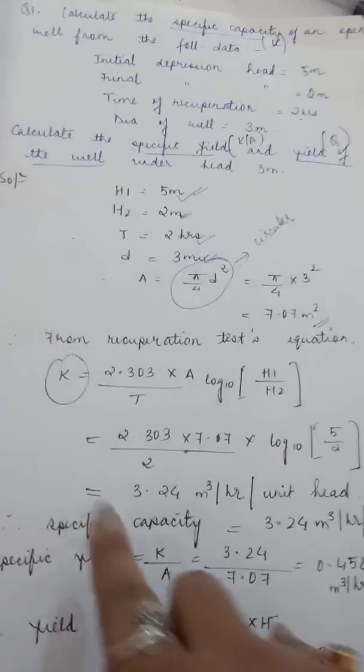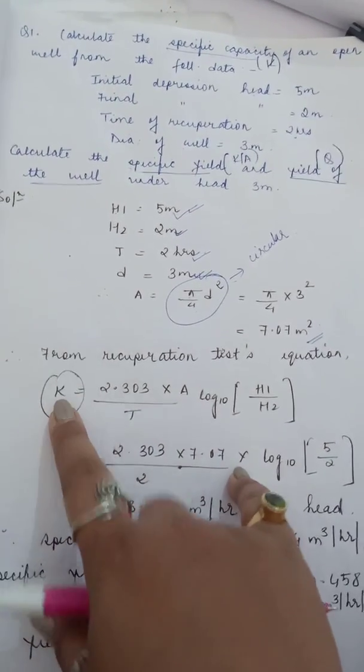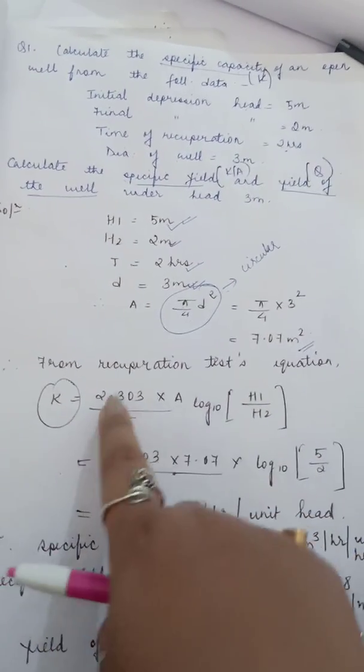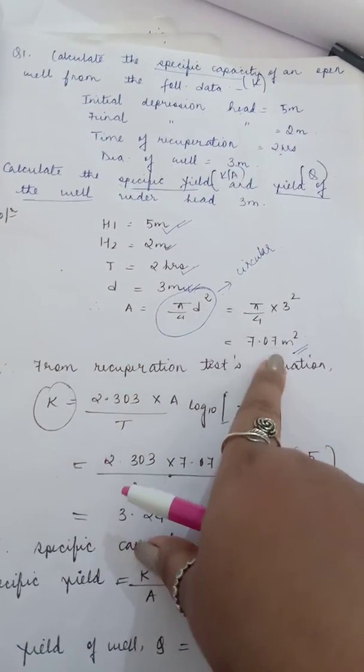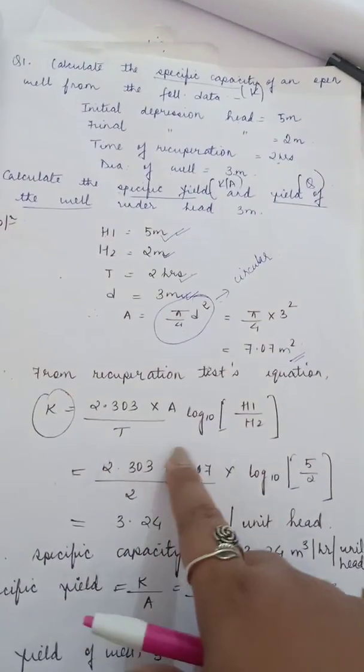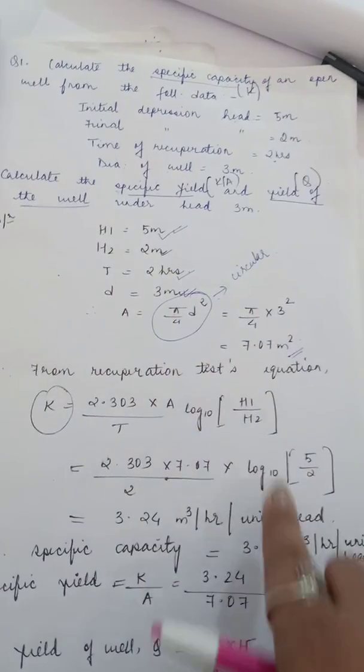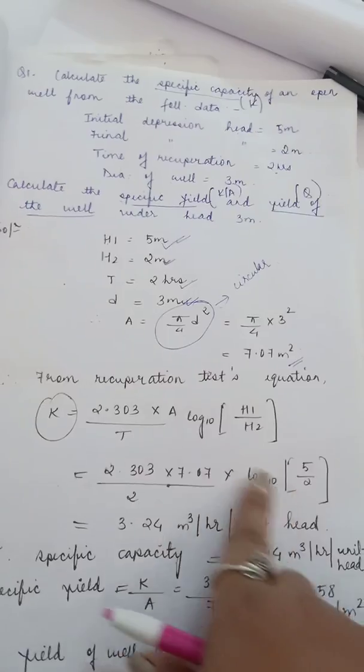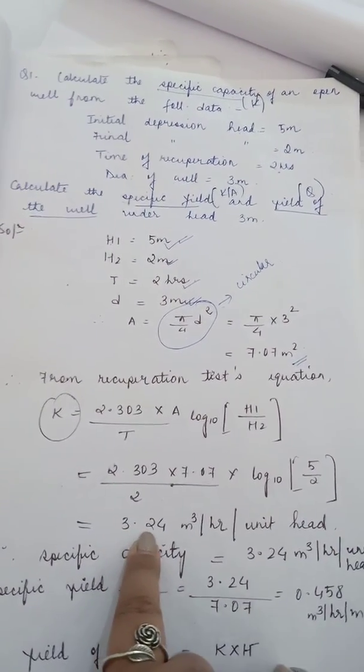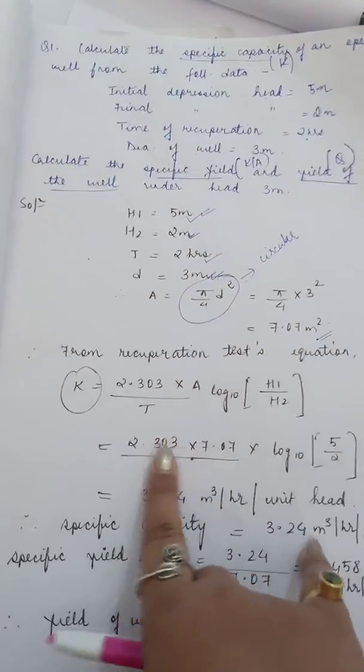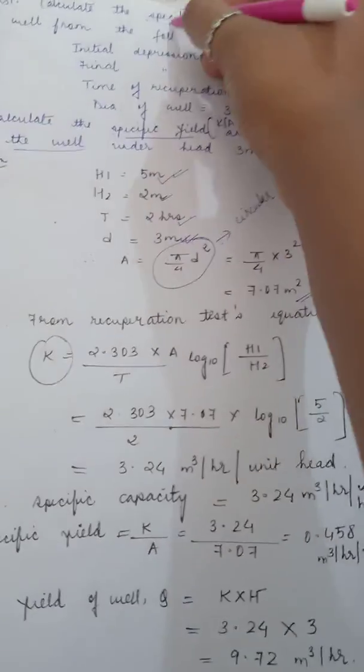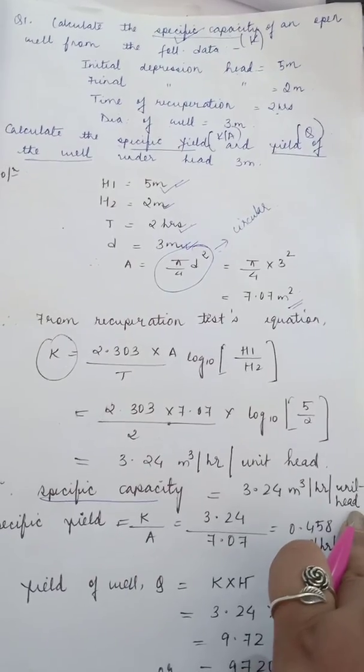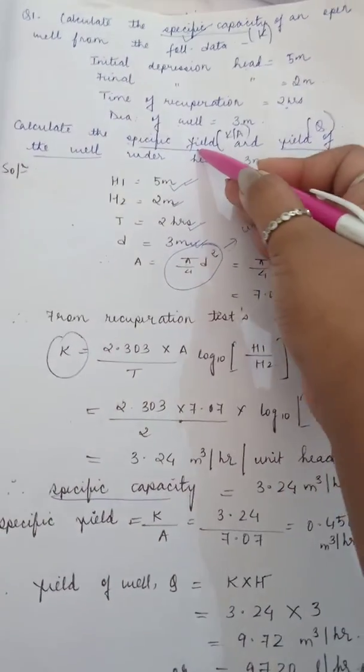Since we're asked to find the specific capacity, we can directly put values in this equation. K equals 2.303 times A which is 7.07 divided by t which is 2 hours, times log of 10 times 5 by 2. Solving this entire equation we get 3.24 meter cube per hour per unit head. So specific capacity equals 3.24 meter cube per hour per unit head.